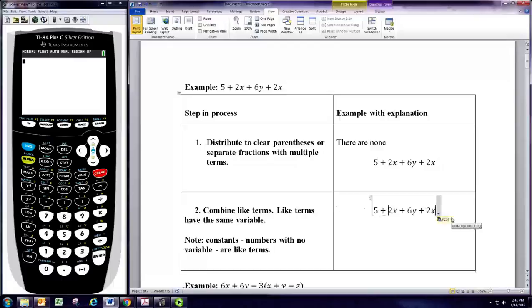So, take the 2x and the 2x and make that a 4x. There are no like terms for the 5 or for the y, so those just stay the way they are. And that's the simplified expression.